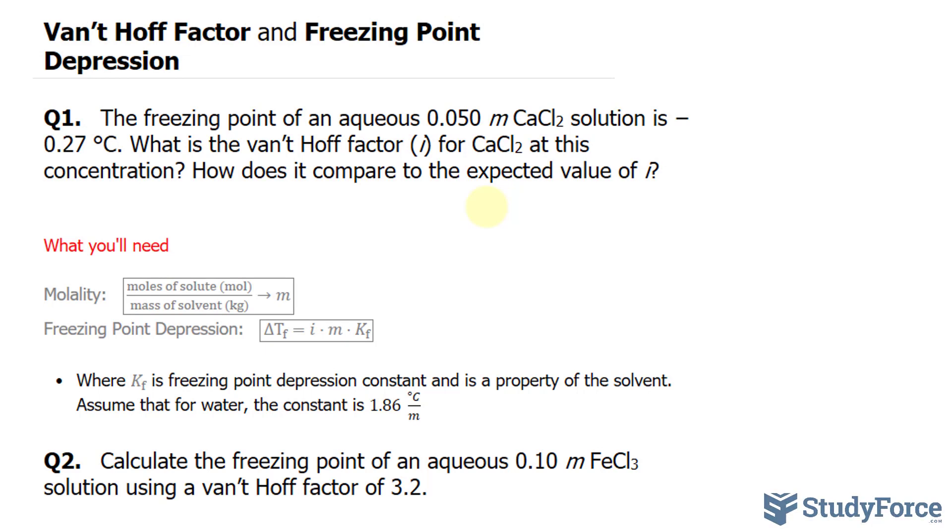We'll start off by discussing what the expected value of i is. When calcium chloride breaks down, it breaks down into three ions: calcium, and it's calcium 2+, and two chloride ions. So the ideal value is equal to 3.